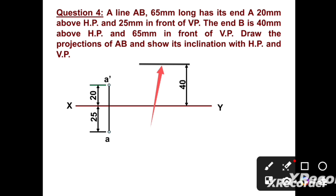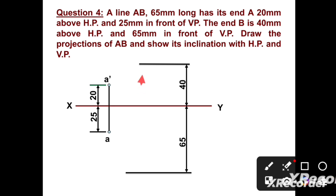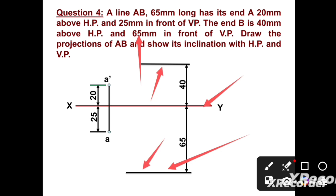Now we can draw one line parallel to the XY line, with the distance between both lines being 40 mm, as the position of point B is 40 mm above HP. We can draw one more line at 65 mm distance below the XY line, as point B is 65 mm in front of the vertical plane. The distance between both lines should be 65 mm, and the length of these lines can be any length.